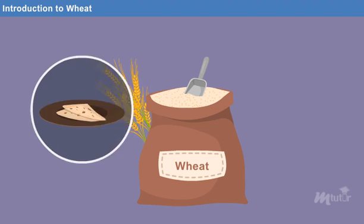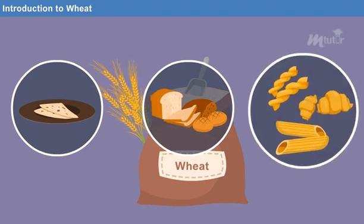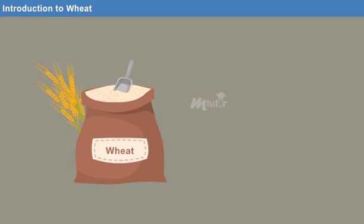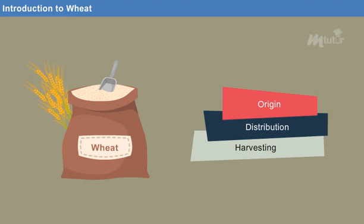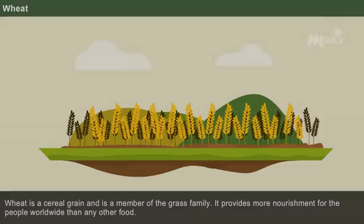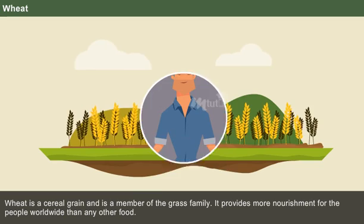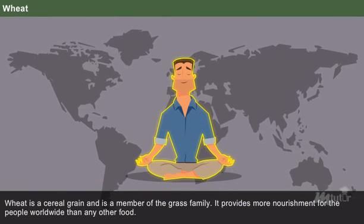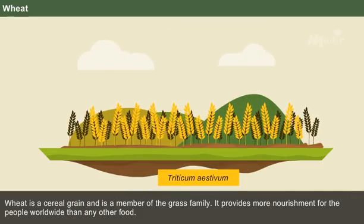Like chapatis, we have several dishes made from wheat, and it is considered the second most produced crop in the world. It is important to know about the origin, distribution, and harvesting of wheat. Wheat is a cereal grain and is a member of the grass family. It provides more nourishment for people worldwide than any other food. The scientific name for wheat is Triticum aestivum.